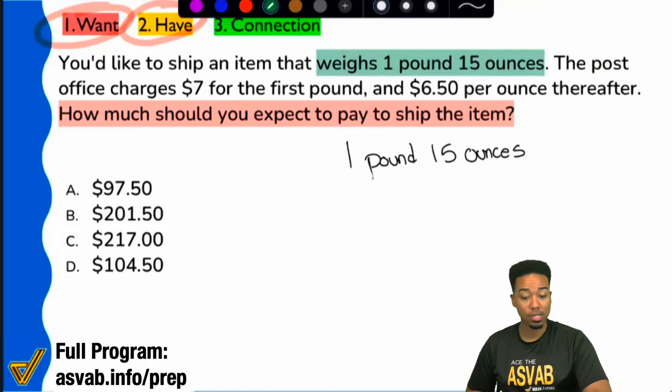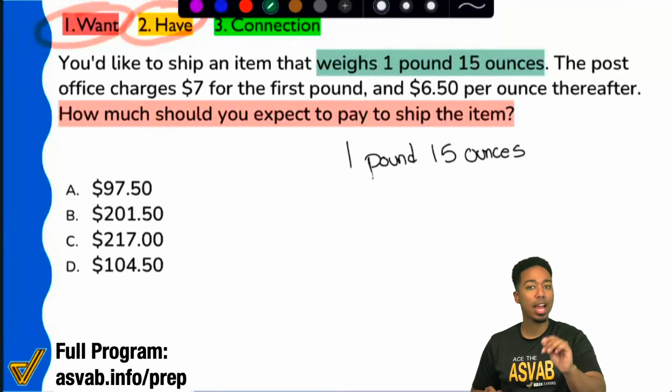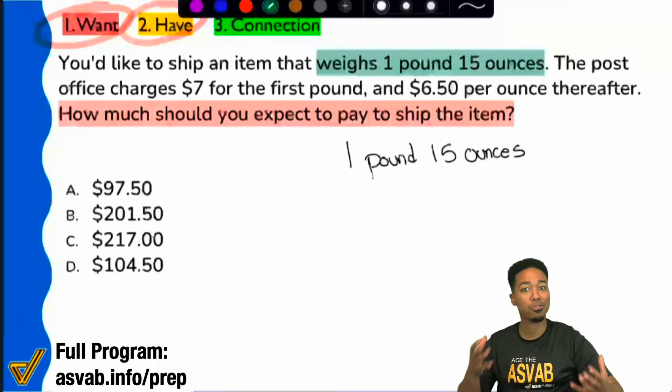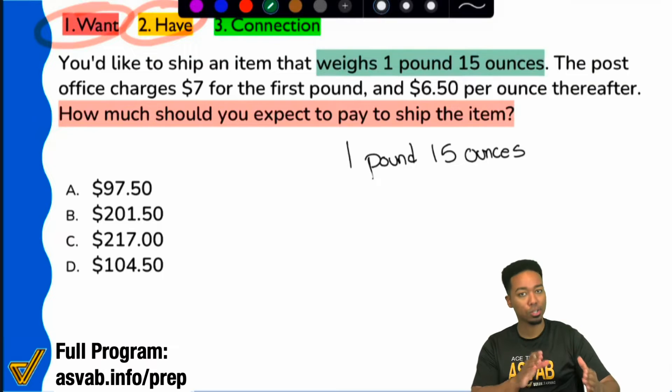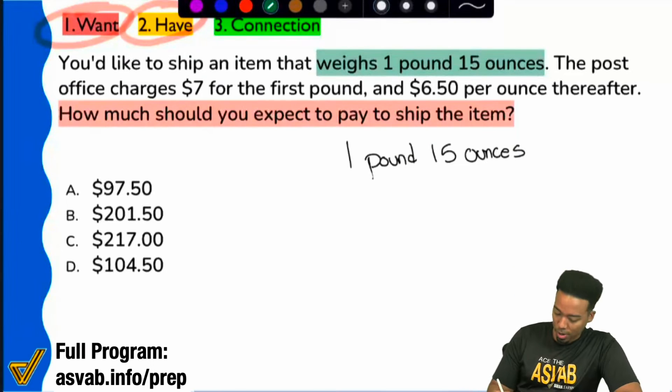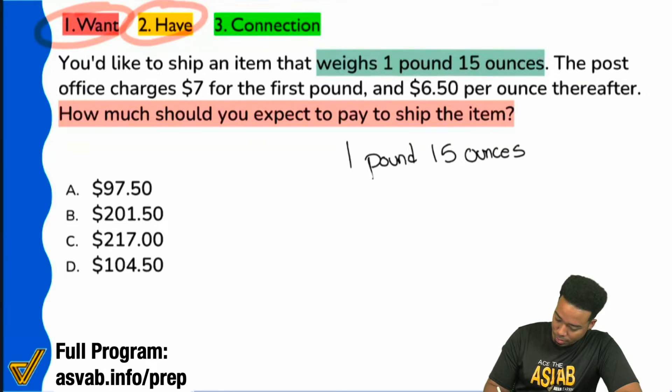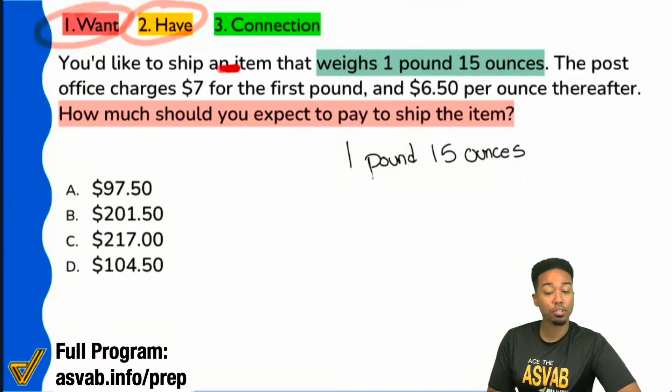Now, the next step is going to be just go ahead and read through all the information. Write down what you feel is important. But remember to not just write down the number, write down what the number means. Write down its meaning, units, keywords, any weird phrasing, make sure to include it. So, here we are, right here. The post office charges $7 for the first pound and $6.50 per ounce thereafter.